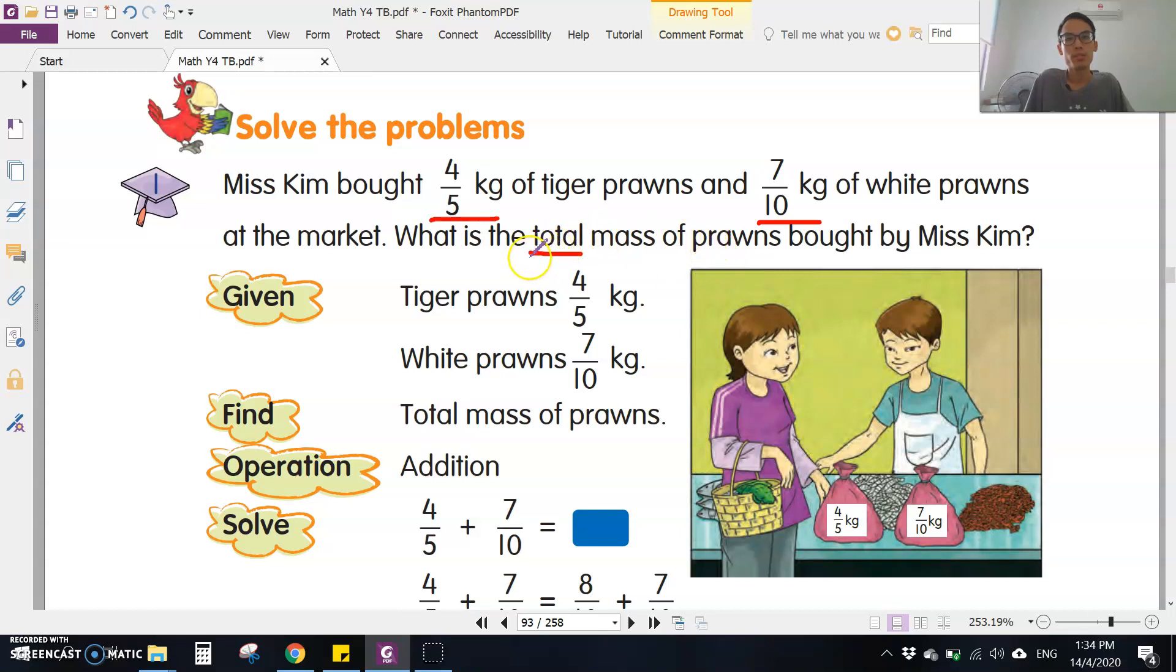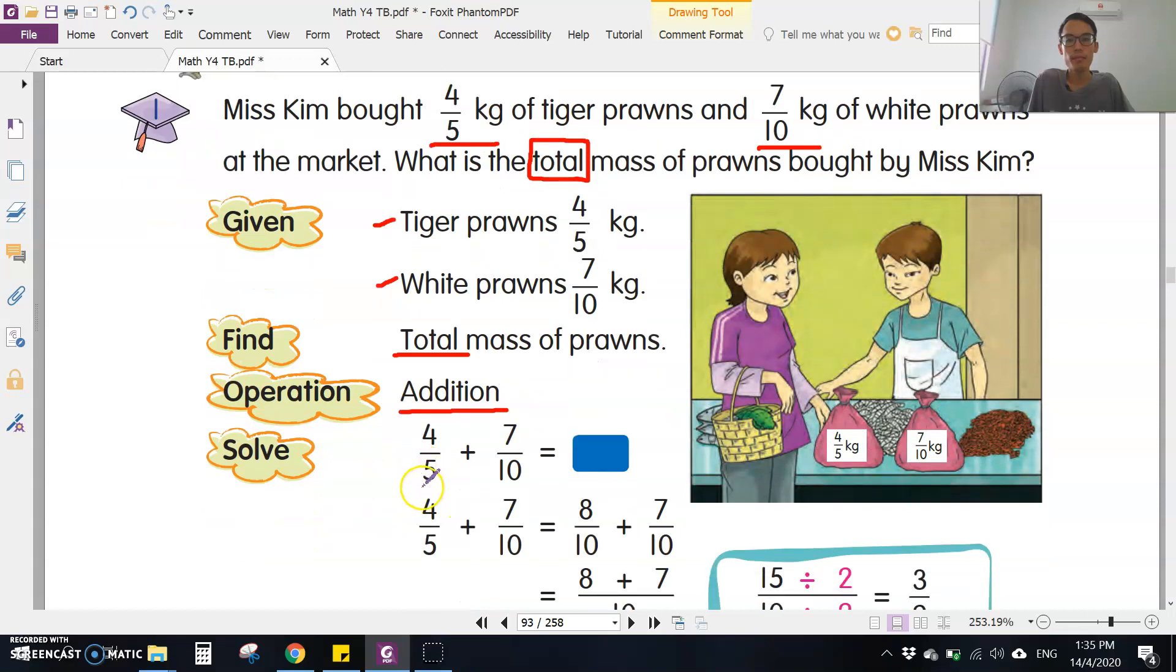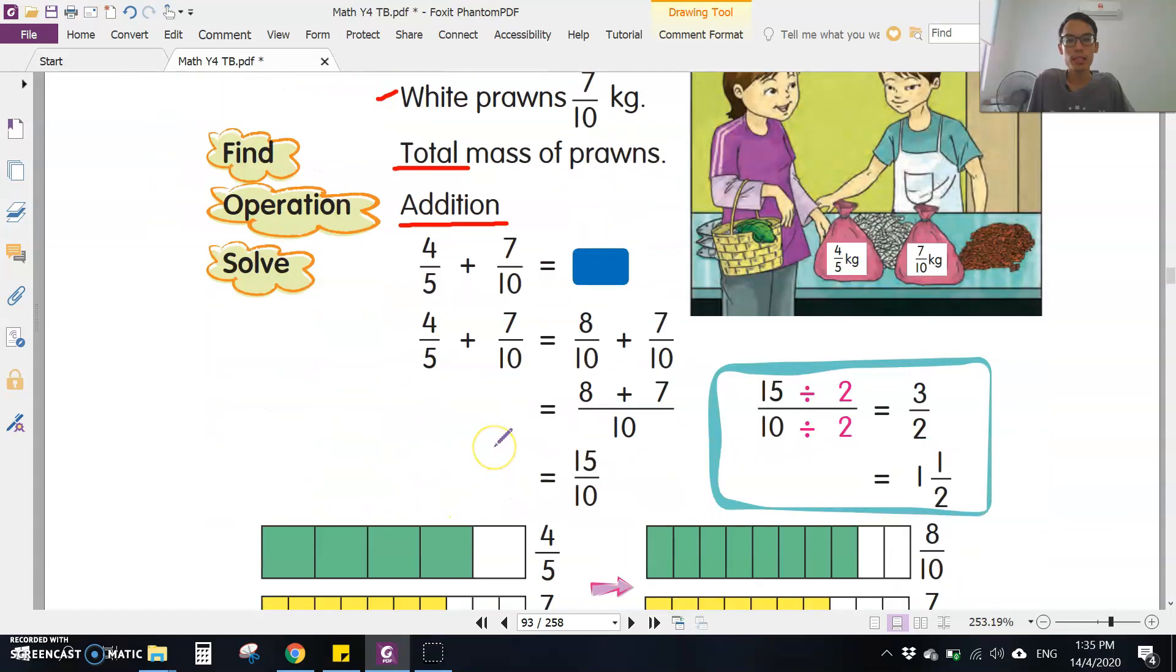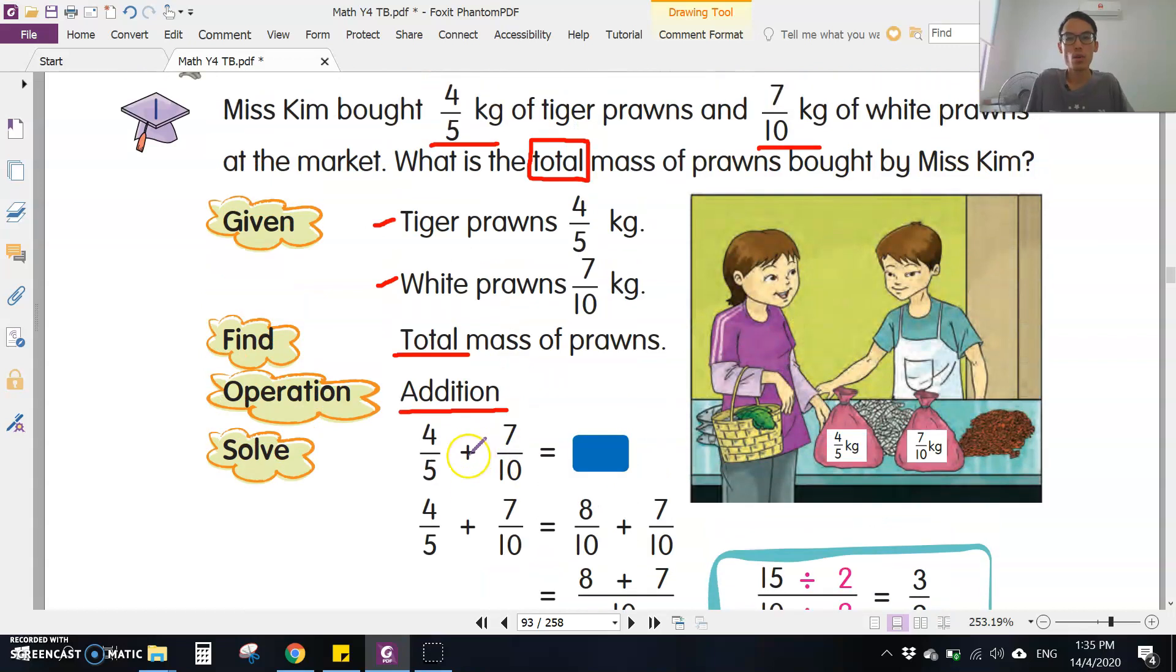You see the keyword 'total' here - jumlah - it means you have to add. What is given? Tiger prawns 4/5 kg, white prawns 7/10 kg. Find the total, so the operation is addition. 4/5 plus 7/10.